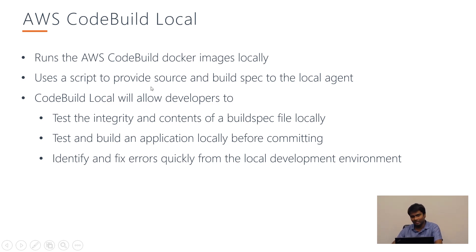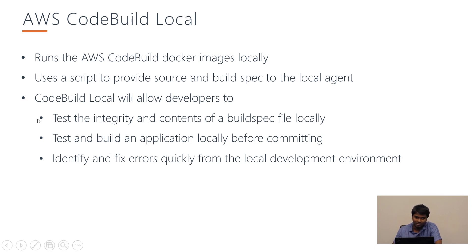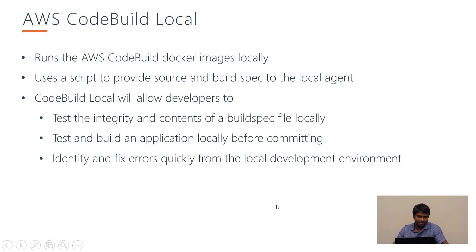Recently, the AWS team released a CodeBuild local Docker image which allows us to run the CodeBuild environment within our local machine. This brings cool improvements to our development workflow — it allows us to test the integrity and contents of a build specification locally. Without this, we'd have to deploy build specification file changes and wait for CodeBuild to run in AWS. We can test the application locally before committing, and the CodeBuild local environment helps us identify and fix errors quickly without waiting to commit all features to the main branch.